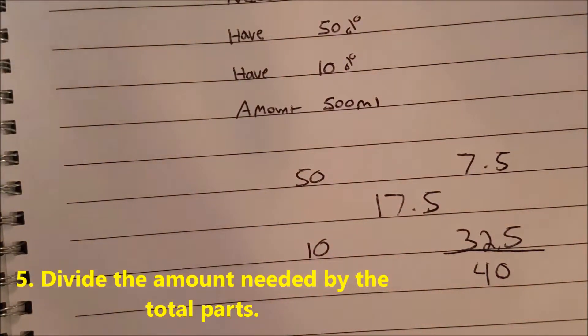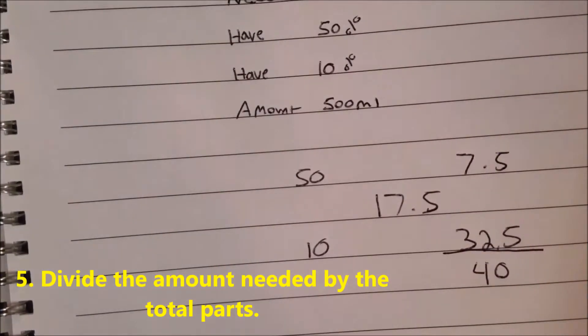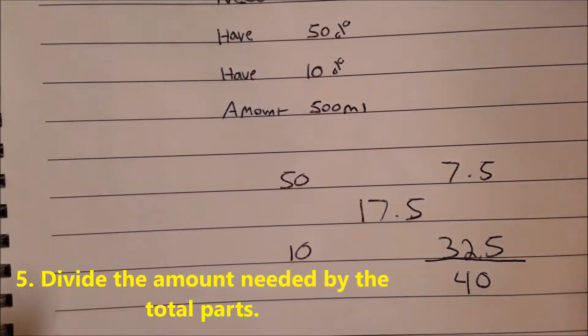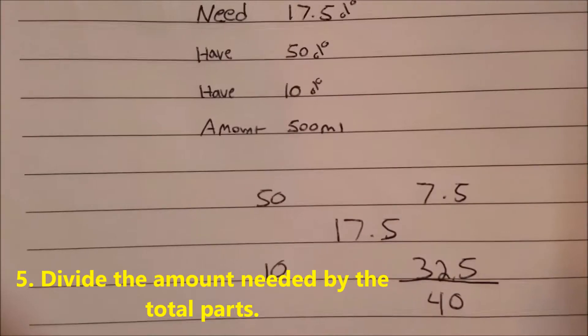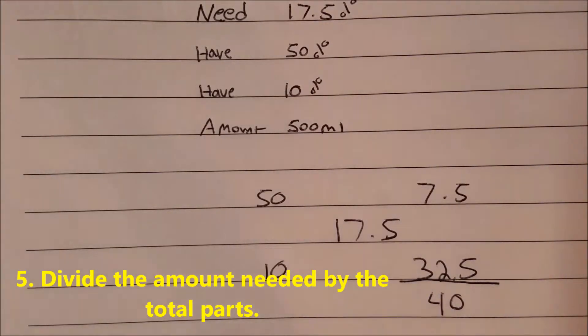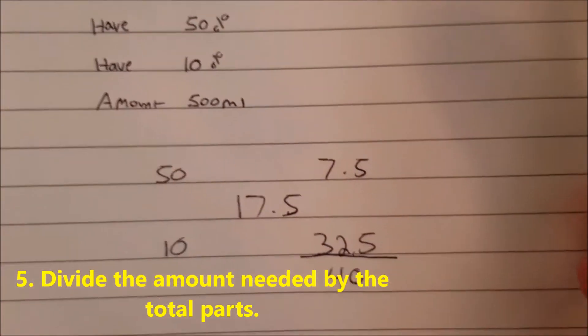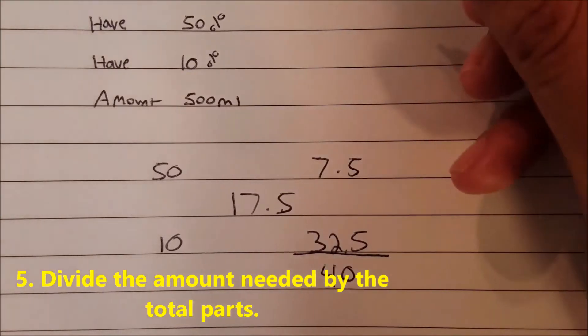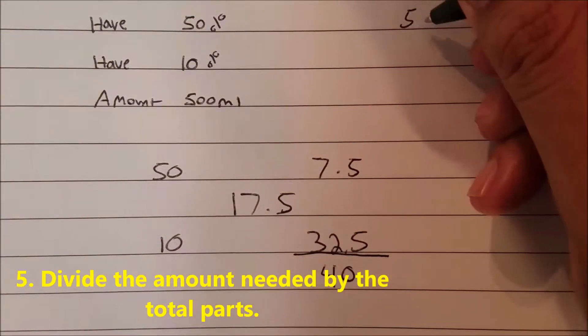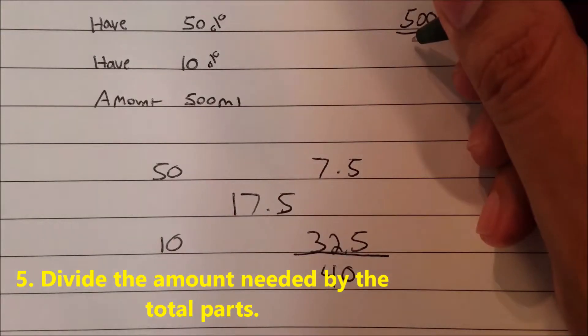The next step: divide the amount needed by the total parts. So the amount needed is 500 mls, divided by the total parts, which is 40. That equals 12.5.